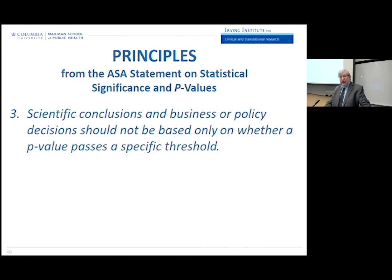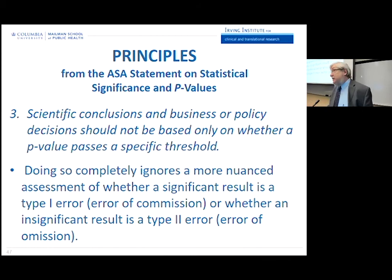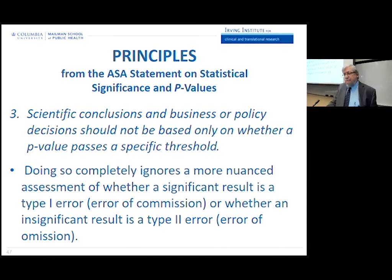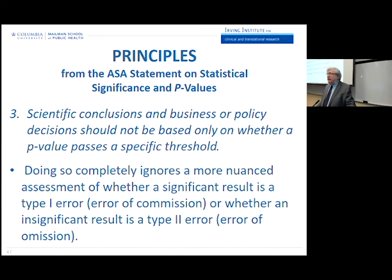This last example is exactly the fallacy we commit when we test hypotheses and conclude that when p is less than 0.05, the null hypothesis must be false. The syllogism says: if the null hypothesis is true, then this result — meaning statistically significant — would probably not occur. That's a correct statement; that's what we mean when p is less than 0.05. But the result just occurred — I got p less than 0.05 — therefore the null hypothesis is probably not true. False. And even worse: therefore my alternate scientific theory must be true. That's an even sillier conclusion. We need to fix what's rotten in Denmark here.